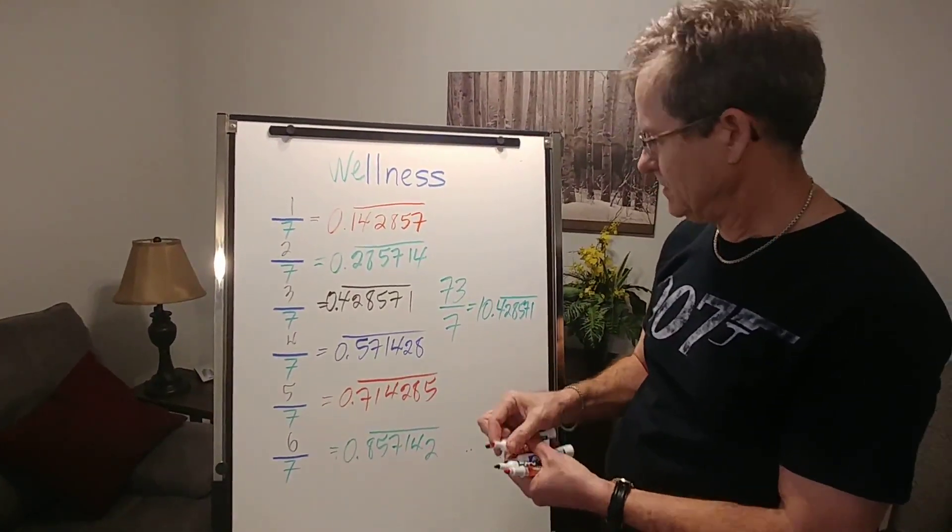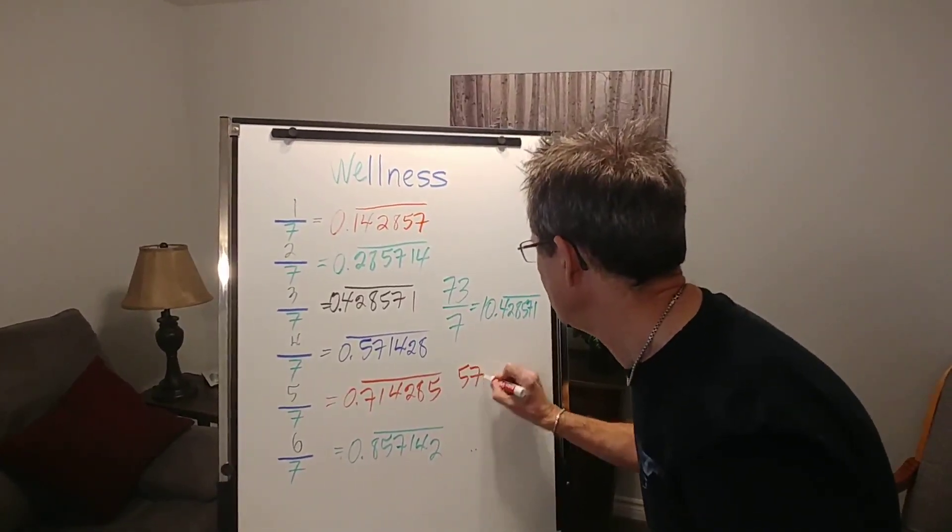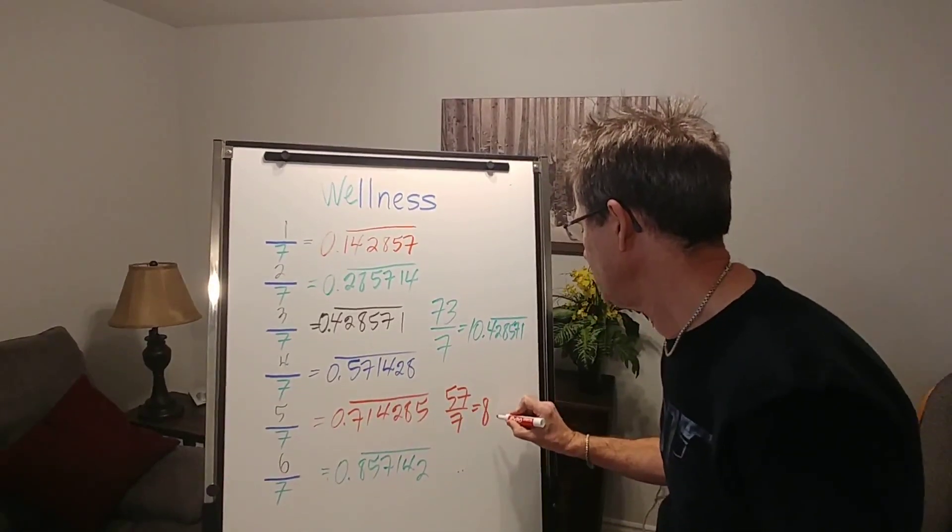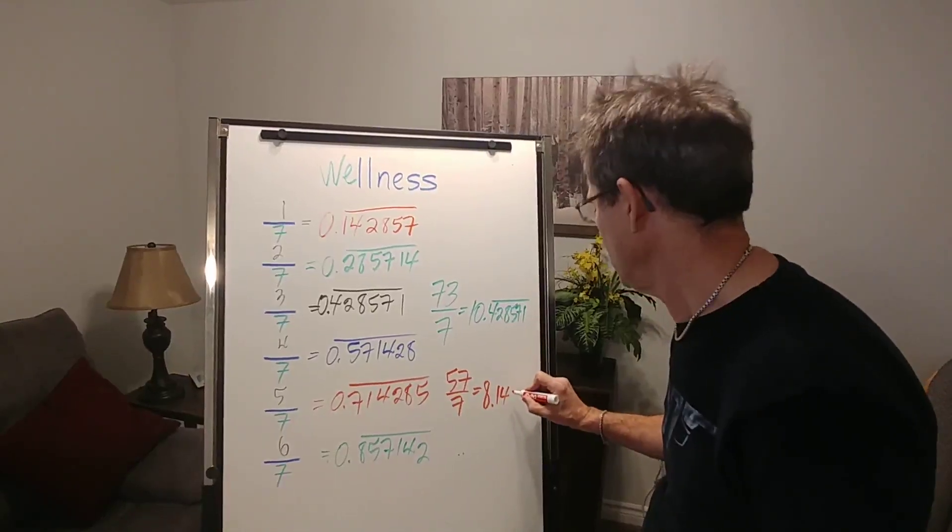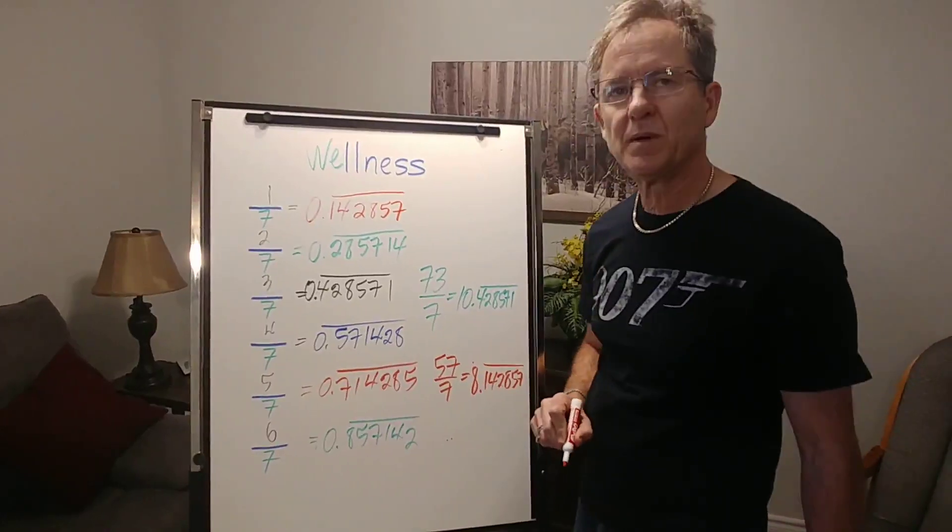Let's do one more. Let's say we do 57 divided by 7. Well, it goes in 8 times—that's 56—with 1 left over. So 0.142857, repeating.